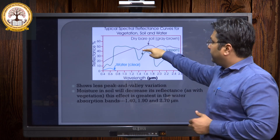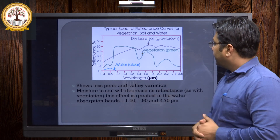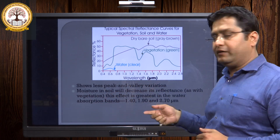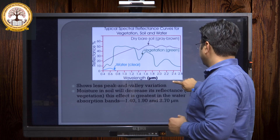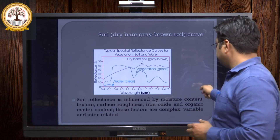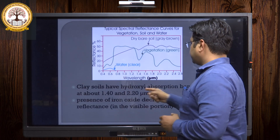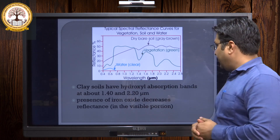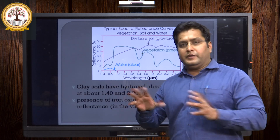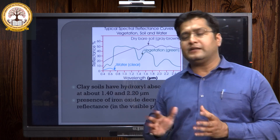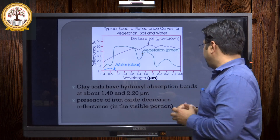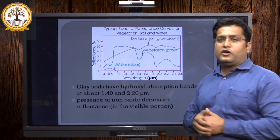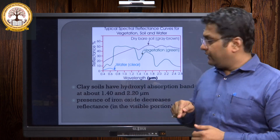In the same way, we can see a small absorption in soil at these particular wavelengths. When talking about clay soil, clay has hydroxyl absorption bands at about 1.4 and 2.2 micrometer. When identifying different types of soil, clay having high hydroxyl bands shows an absorption valley identifiable at about 1.4 to 2.2 micrometer.